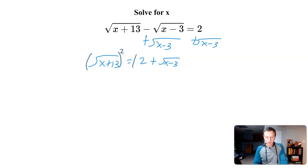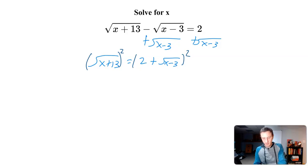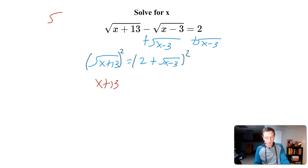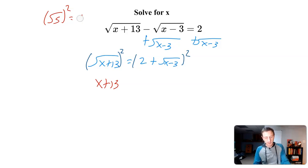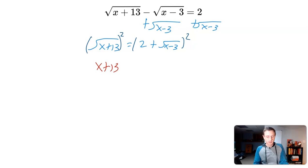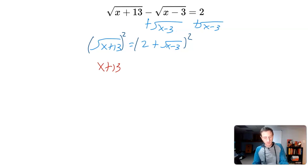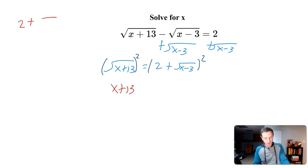That doesn't mean I'll be completely rid of radicals, because I'll still have one on the right side after multiplying out. But at least I'm chopping it down a bit. When I square the left side, the square root of x plus 13 squared is just x plus 13 — like the square root of 5 squared is just 5. On the right side I have 2 plus square root of x minus 3, all squared, so I need to multiply that out: 2 plus square root of x minus 3 times 2 plus square root of x minus 3.